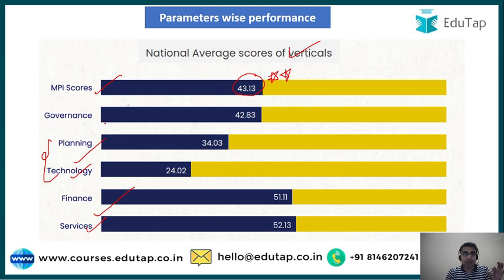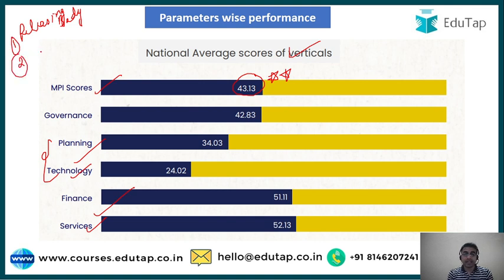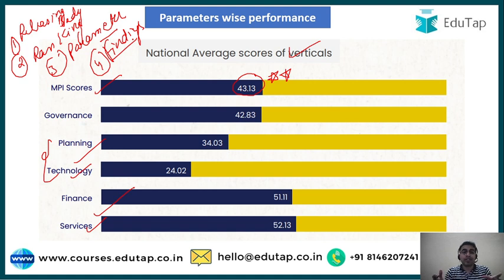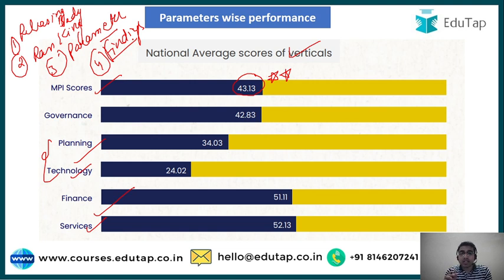To recap what we have covered in this session: the releasing body of the index, the key indexes, their rankings, the parameters used to calculate index scores, and the findings — including the performance of indicators and cities. Now let's test how many key takeaways you have gathered, as they are very important from an exam point of view.